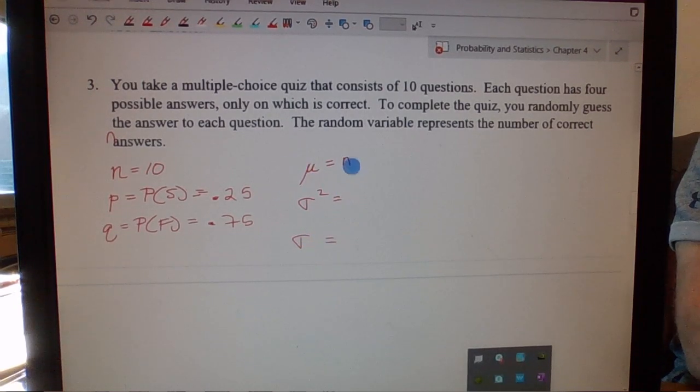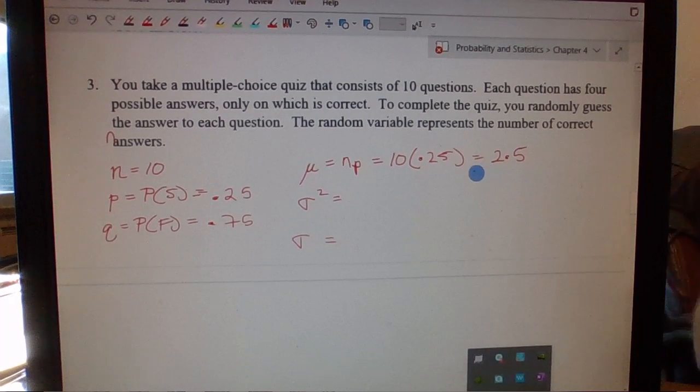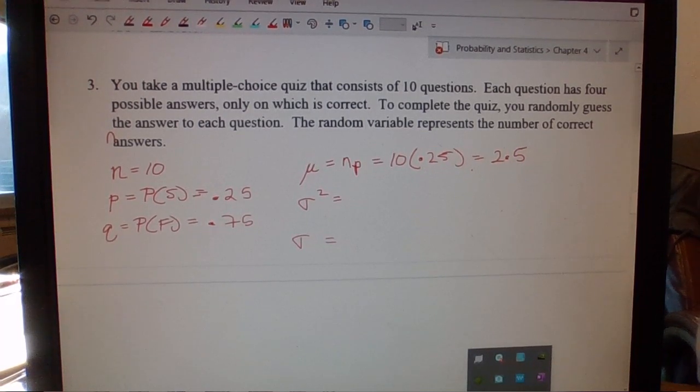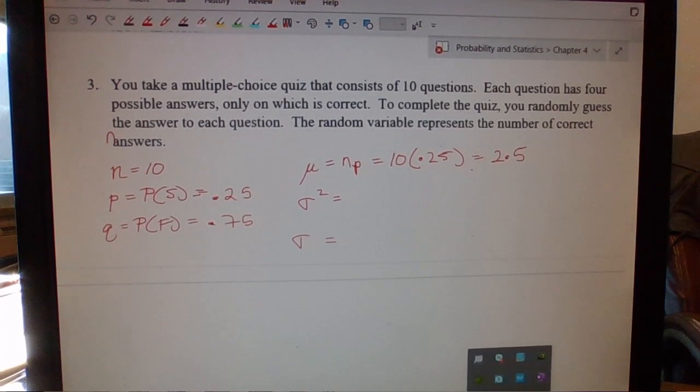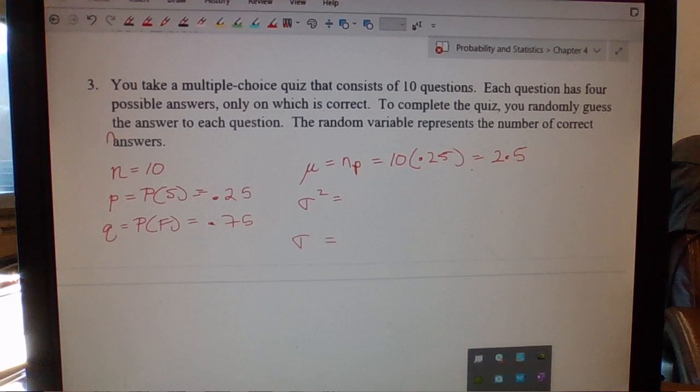So the mean, remember that was N times P. So N is 10, P is 0.25. So when I multiply those out, I get 2.5. So what that means to me, if we were to do this - let's say that I gave every person in the school this quiz and they did this exact same thing, they just guessed all the way through - what we're saying is on average, there's going to be 2.5 correct answers for each person. Some people might have 3, some people have 2. There might be a person that has 7, but then there's going to be a person that might have 1. That's all going to average out to, on average, per person, 2.5 correct answers out of those 10.